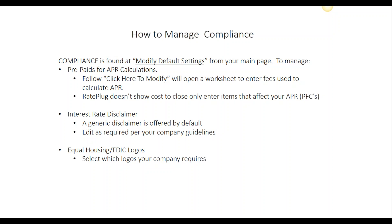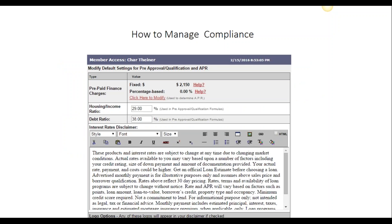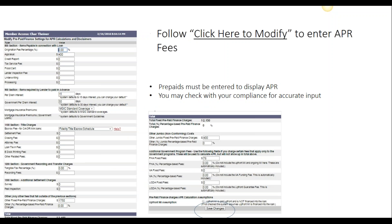Lastly, you'll want to set your compliance fields. Here you'll be able to maintain your APR, disclaimers, and required logos. To calculate your APR properly, our system needs you to provide your APR fees. You'll follow the link that says Click Here to Modify, and it will open up a worksheet for you. Please be sure to enter only those items that affect your APR. Nowhere in our system do we tell consumers their cost to close, so this worksheet will be strictly for your APR calculation.